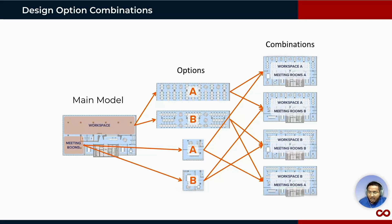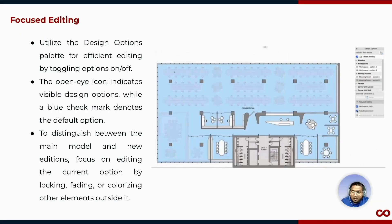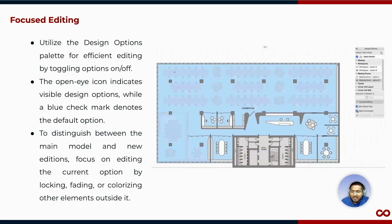Design options are a view-based setting, meaning we can choose any desired view — 2D or 3D — and create a new view by selecting a design combination to be displayed. You can also arrange the design options on a layout for better comparison. Focused editing is one feature from the Design Options palette that helps efficiently edit or toggle between these options.